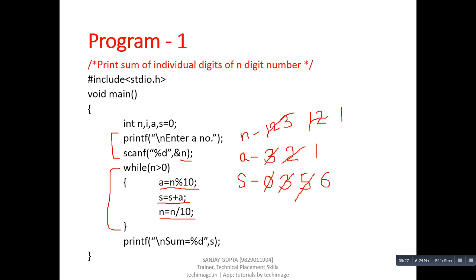Now we divide n by 10: 1 divided by 10 equals 0. The value of n is now 0, so the condition n greater than 0 is false, and the loop terminates. After the loop, the printf statement displays the value of s, which is 6. So the output of this program is 6. The input was 123 and the output is 6, confirming that we can use a while loop to add the digits of a number.